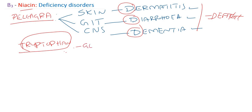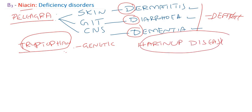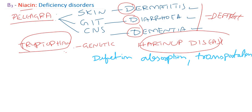There is one genetic disorder called Hartnup disease. In Hartnup disease, there is a defect in the absorption of tryptophan — mainly from the gastrointestinal tract — or a defect in its transportation. This is a genetic disorder.